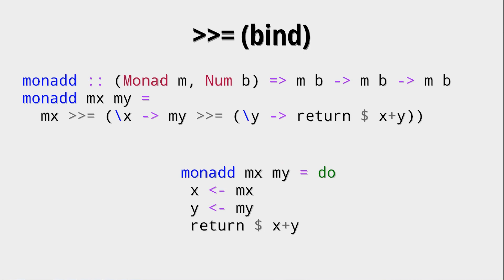Using do notation, we can actually rewrite this monadd function, and it looks like this. We have the monads mx and my, of course, and we get those values with x left-arrow mx and y left-arrow my, and then we return the sum of those two. Great.